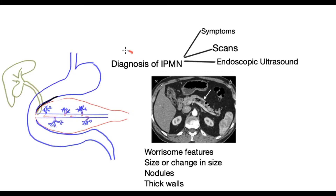In this video we will discuss the diagnosis of a condition called IPMN of the pancreas — interductal papillary mucinous neoplasm. We briefly talk about the symptoms, how this condition is picked up on scans and what it looks like, and the role of endoscopic ultrasound in its diagnosis and assessment.